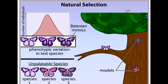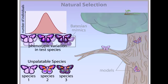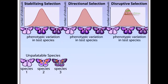However, when birds eat mimic individuals, which are tasty, they have more trouble learning which butterflies to eat and which to avoid. Using this concept of Batesian mimicry, we can now explore several types of natural selection.